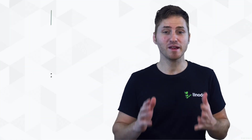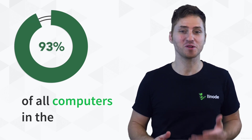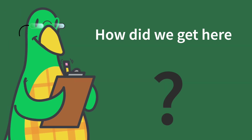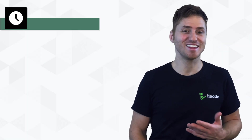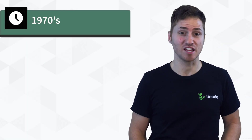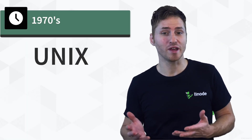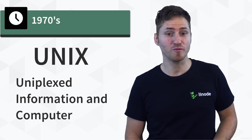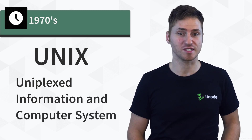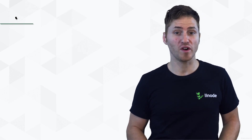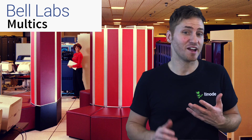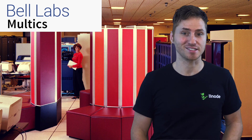Linux makes up approximately 93% of all computers in the world today. So how did we get here? This story begins in the 1970s, when an operating system called UNIX — which stands for Uniplex Information and Computer System — was created as an alternative to the system at Bell Labs entitled Multics.